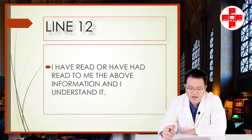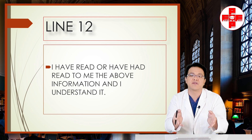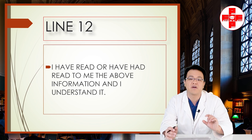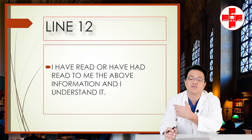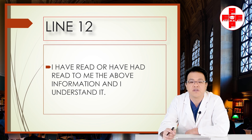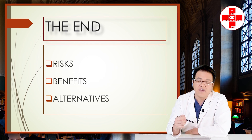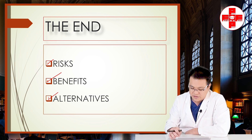Line twelve: 'I have read or have had read to me the above information and I understand it.' This is just one version of multiple versions of an informed consent, all originating from 1996. Your VBAC or TOLAC consent may look different, but this example covers several bullet points — nuggets of information — that help you decide whether to schedule a C-section or try a trial of labor after C-section in hopes of achieving a VBAC, addressing risks, benefits, and alternatives.